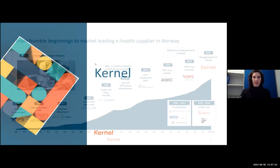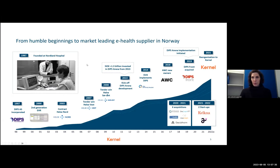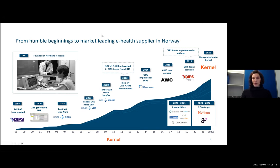Kernel is the group company — the largest e-health group company in Norway. DIPS is the main locomotive of the group, our biggest company. We're also investing in and developing startups that are still pre-commercial but quite complementary to the solution DIPS provides. It's a fairly new group company, actually established after DIPS was acquired by the current owner, because we saw we could create better synergies between the group companies.